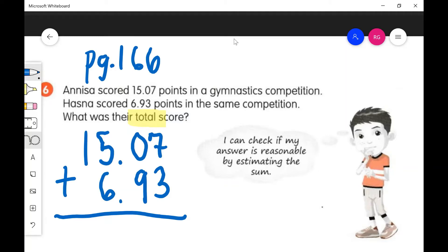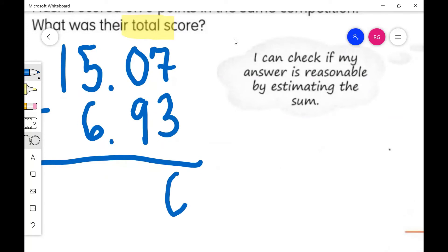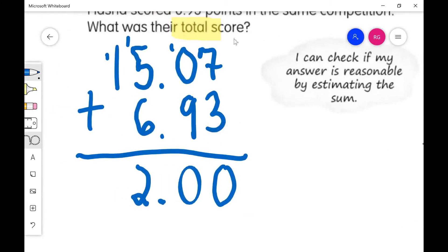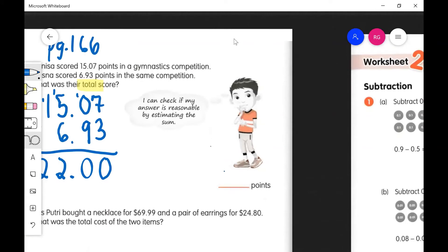That's obviously going to be zero zero, carry our decimal down, and we have 11, 12. What's my answer? What's the answer there guys? 22. We could say that's their total score is 22 points.